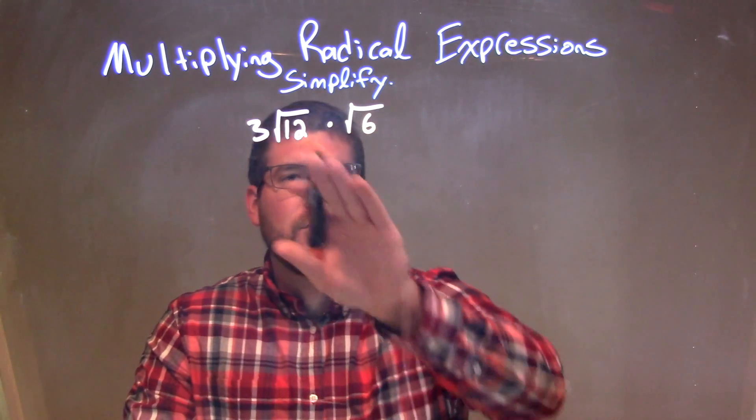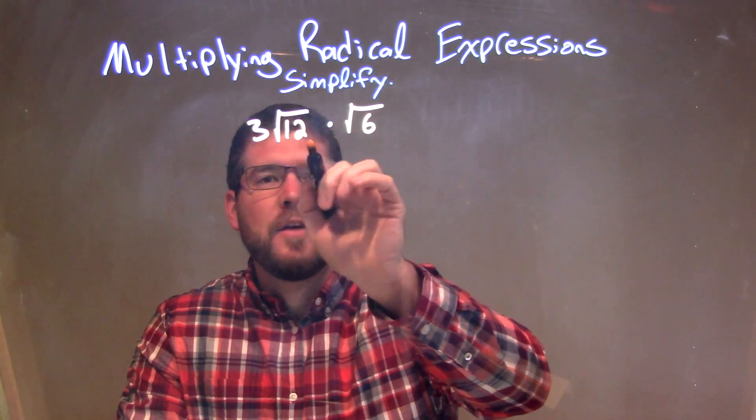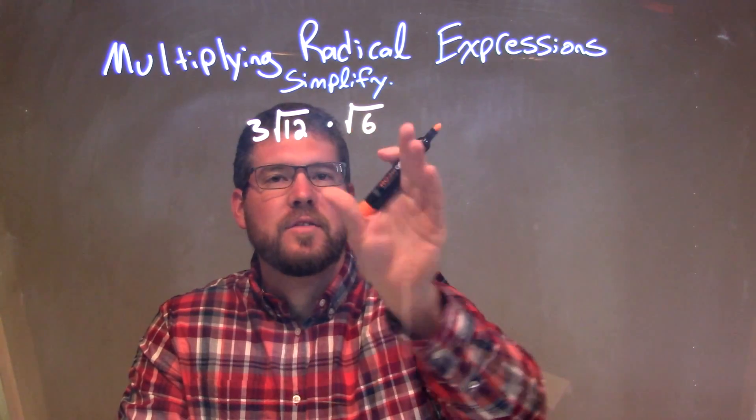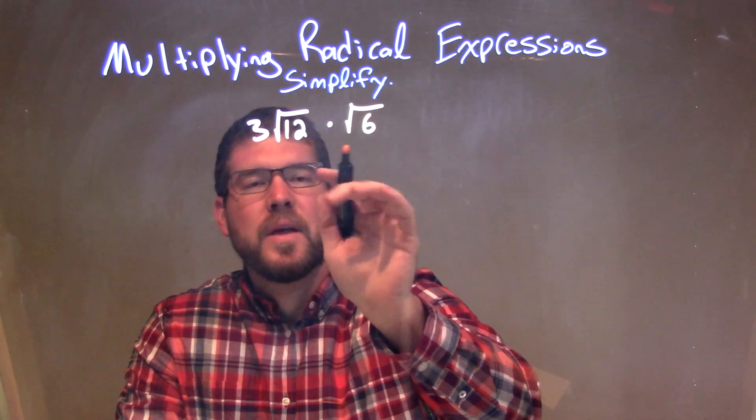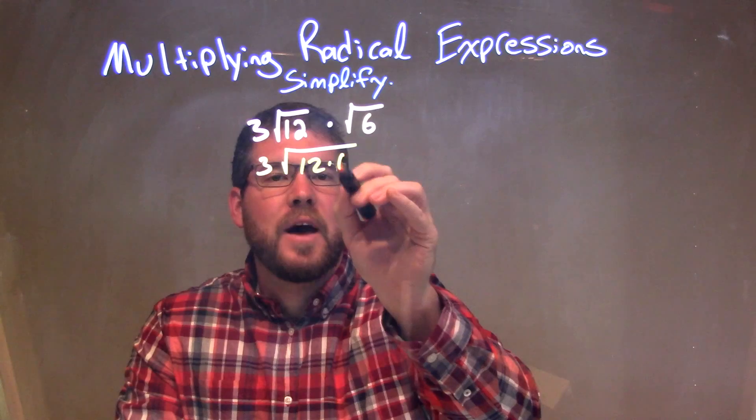One of the joys of having square roots here, when we're trying to simplify, is that we can combine them. If we have the square root of 12 times the square root of 6, we can combine those together under one square root. So we have 3 times the square root of 12 times 6.